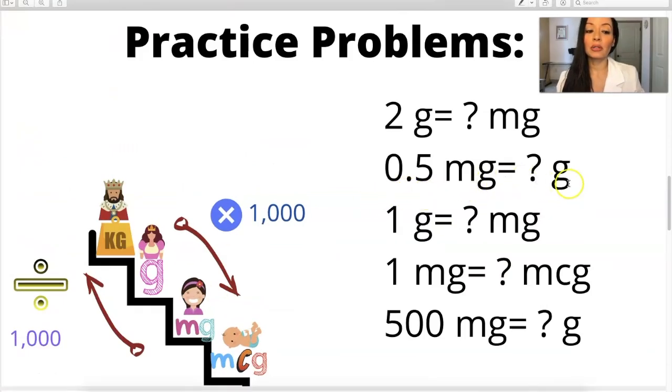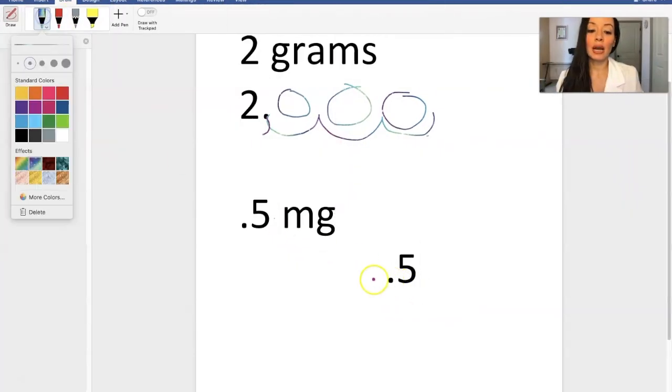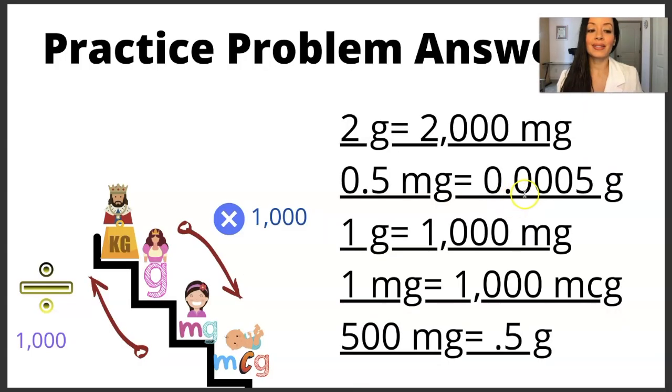Next one is 0.5 milligrams to grams. So we have Millie here and we're going to move up in this direction. So we're moving up. And if we're moving up, the numbers get smaller. We have 0.5 milligrams. How many grams will that be? Okay. We're moving this to the left? One, two, three. Here's the new decimal point. We add a zero, a zero, a zero. It becomes 0.0005 grams.